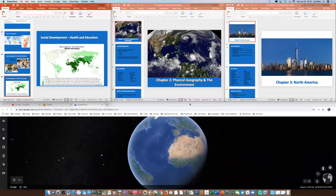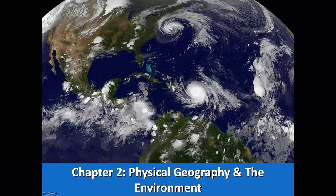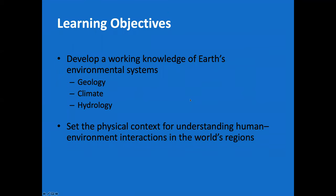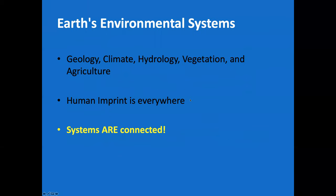That was chapter one. Chapter two is more about physical geography and the environment — we'll be dealing with more natural events, but of course all these natural events affect people. We'll look at the idea of geology and climate, and understanding how the physical context and physical environment affects human interactions with the world around it. The human imprint is impossible to ignore, and systems are connected.